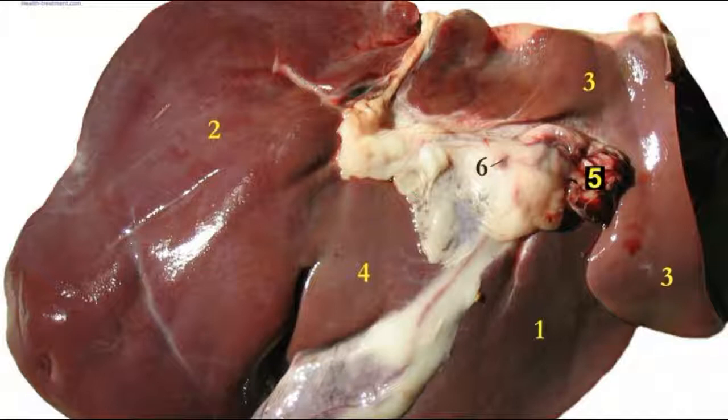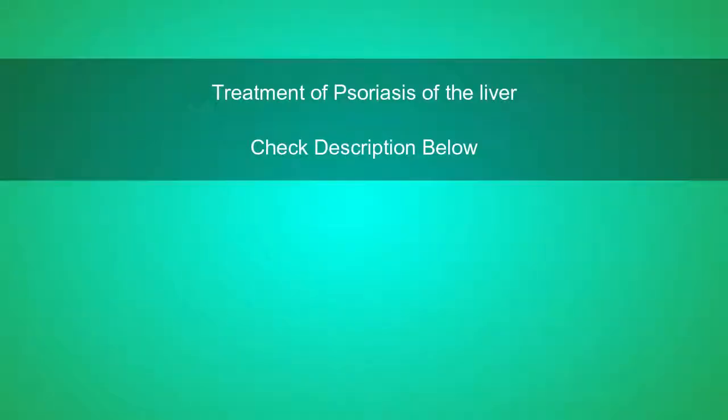Injuries within the bile duct usually permit bile to flow from the liver into the gallbladder. Normally, infants are occasionally born with the loss of bile duct or with an injured bile duct. Treatment of psoriasis of the liver: check the description below.